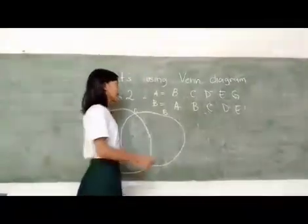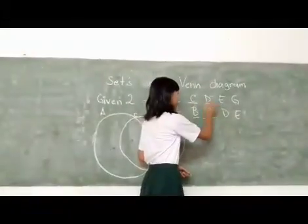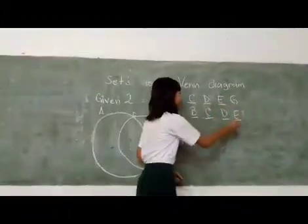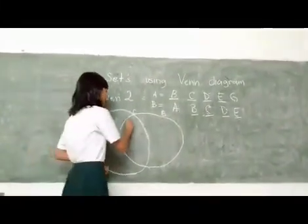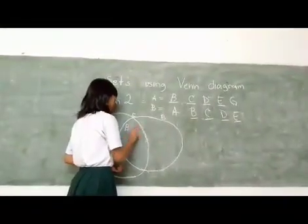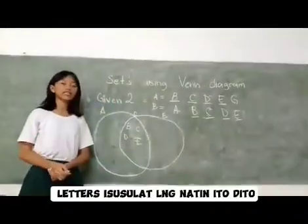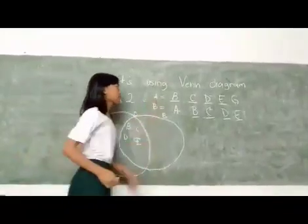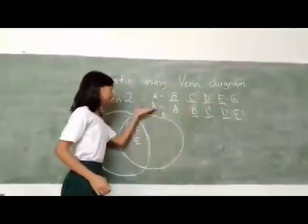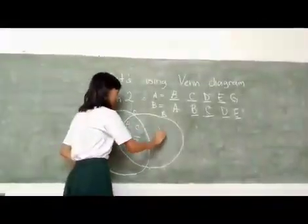Pag mahanap na ito, isusulat na lang ito sa divin na. Para sa natin kinakit ang letter, ay isusulat natin ito sa mga bakante. Sa A, meron tayong natin ang G. At sa B, meron tayong natin ang A.